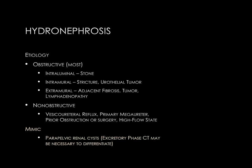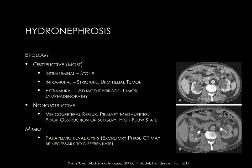A mimic of hydronephrosis to keep in mind is parapelvic renal cysts, sometimes called renal sinus cysts. Most renal cysts occur peripherally in the cortex, but some may occur near the renal pelvis. On these CT images, the upper image shows a hypodense area at the renal collecting system that looks a lot like a dilated collecting system. But on the delayed image labeled B, there is contrast excretion within the true collecting system, which is not very dilated — so those hypodense areas are actually parapelvic renal cysts.